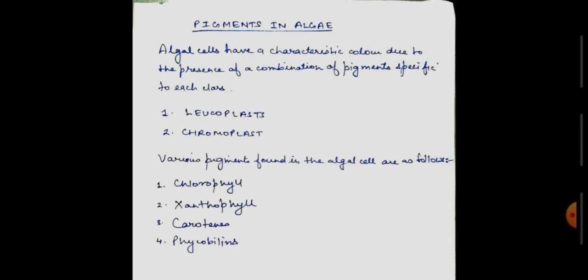In all the classes of algae, except Cyanophyceae or Blue-Green Algae or Cyanobacteria, the pigments are present within membrane-bound organelles known as Plastids. In Blue-Green algae, the pigments are concentrated in the peripheral cytoplasm known as Chromoplasm.